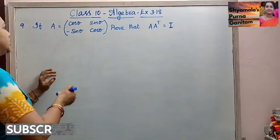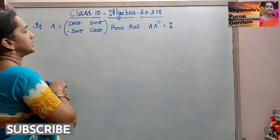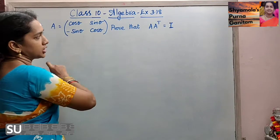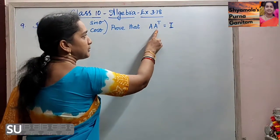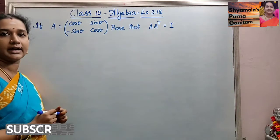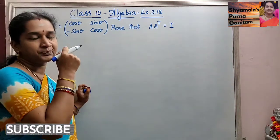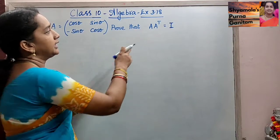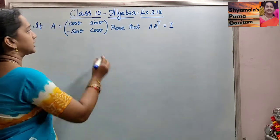Ninth sub. If A is equal to [[cos theta, sin theta], [-sin theta, cos theta]], prove that A into transpose of A is equal to the identity matrix. The diagonal we have to get 1 — that is what we are asked to prove.